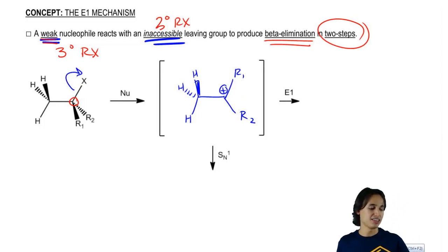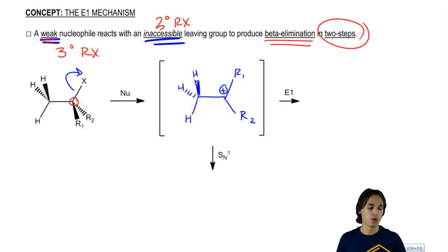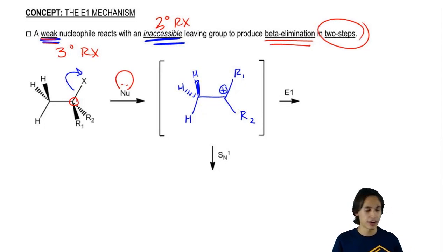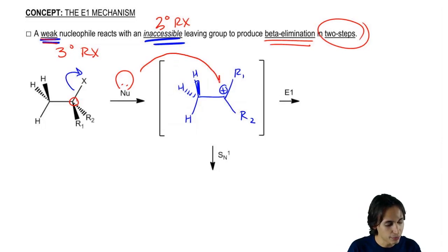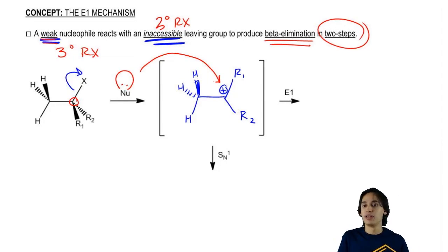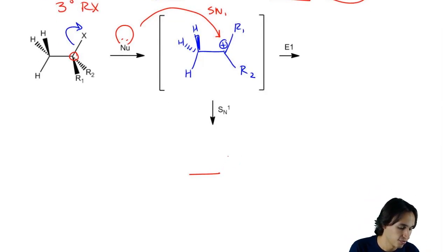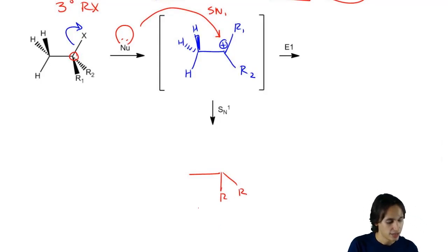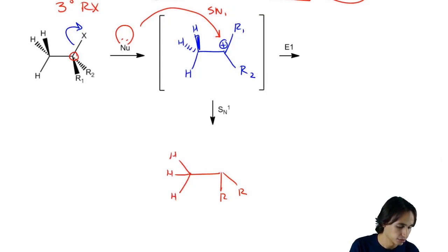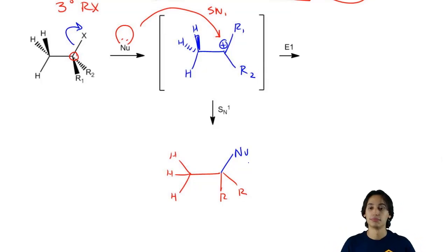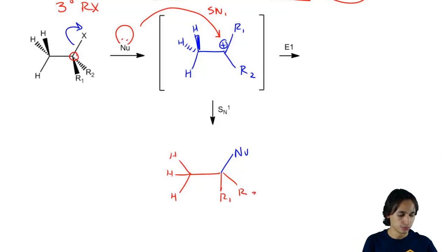So now what? That carbocation is going to react with the nucleophile next. The nucleophile has electrons to give away — it doesn't have a negative charge but it does have a lone pair, so it could attack the carbocation directly. That is going to happen. The nucleophile directly attacks that carbocation and that's called the SN1 mechanism. The SN1 product would have the two R groups and the nucleophile attached to where that carbon was.